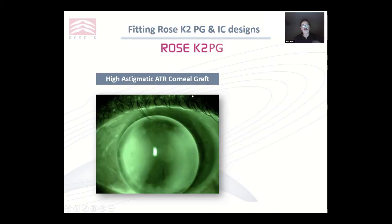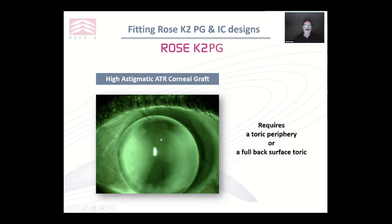Here's another against-the-rule corneal graft. Here the lens is not locating correctly — it's going to push out. So we need to do something to overcome that. We could use a toric periphery, meaning the central part of the lens remains spherical but the last millimetre or so becomes toric. In this case, I would revert to a toric periphery as my first option. If that didn't work, you can go to a full back surface toric.